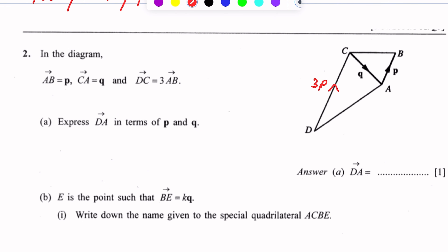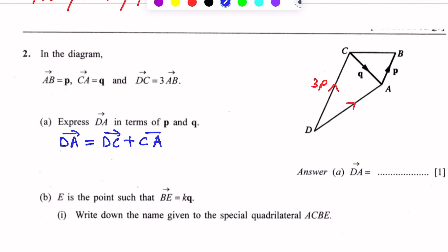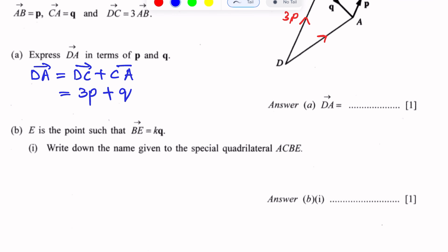Now we find the DA vector. Using the head-to-tail rule: DA vector equals DC vector plus CA vector. DC is 3P and CA is given as Q, so DA equals 3P plus Q.